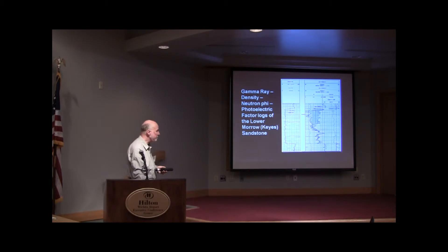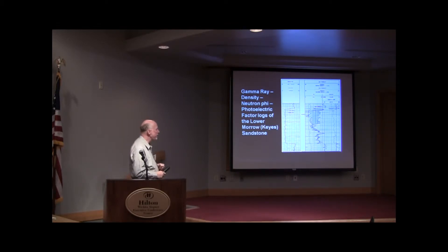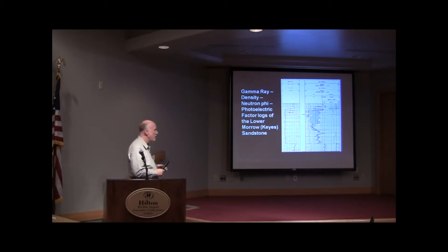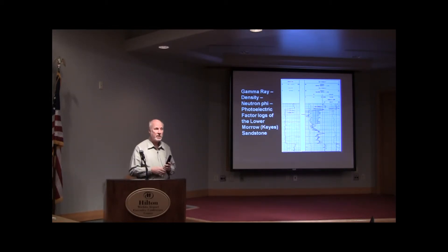Here we are down in the lower Morrow sandstone section — a nice development of Morrow with shale above and shale below. Looking at the porosity logs, we have both a neutron and a density log: the density as a solid curve, the neutron as a dashed curve. There's good porosity development towards the top, and we're seeing both a sandstone effect — because these are on limestone units — and also a gas effect. As Yogi Bear once said, it's amazing what you can see just by looking.